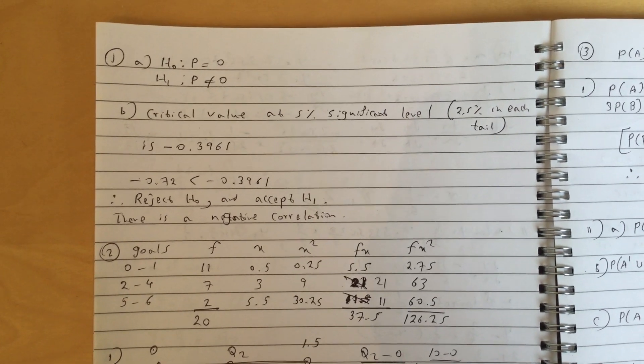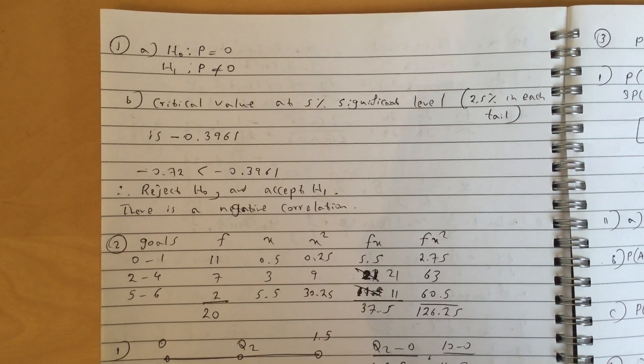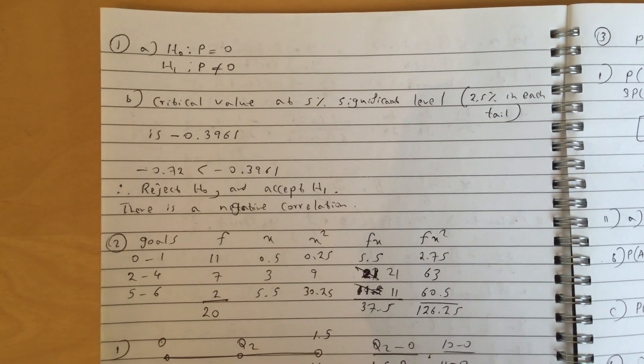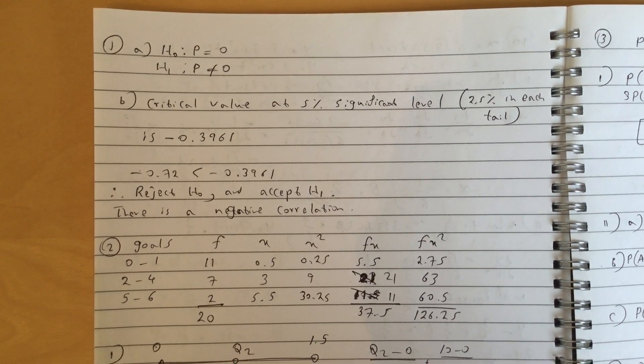So question 1, you write the null hypothesis and you can see you can reject H0 because it's in the critical region and you can write there is a negative correlation.